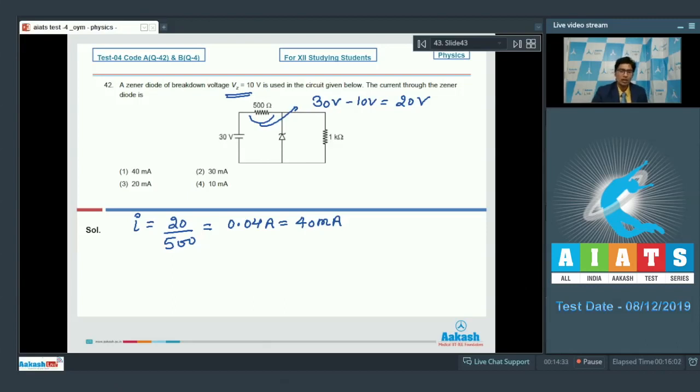In this particular question, since the potential difference across the Zener diode is 10 volt, similarly a potential difference of 10 volt will be across 1 kilo ohm resistor. And the current I2 across the 1 kilo ohm resistor would be 10 divided by 10 raised to power 3, that is 1 kilo ohm resistance, which will be equal to 10 milliampere.